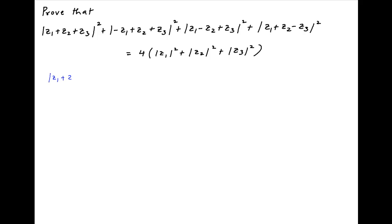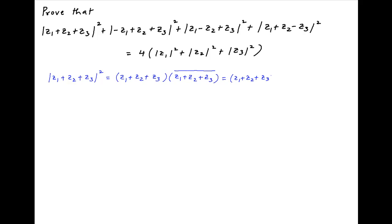The square of the absolute value of z1 plus z2 plus z3 can be written as the product of z1 plus z2 plus z3 and its conjugate. And this is equal to z1 plus z2 plus z3 multiplied by the conjugate of z1 plus the conjugate of z2 plus the conjugate of z3.